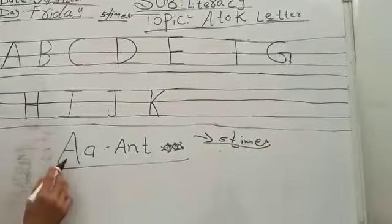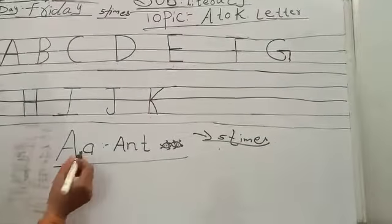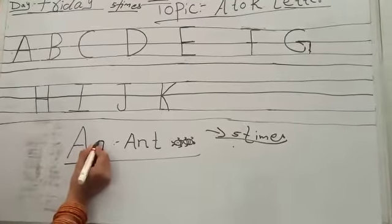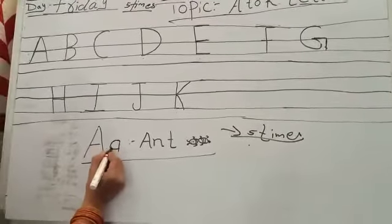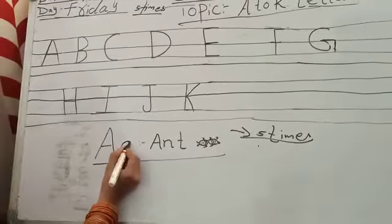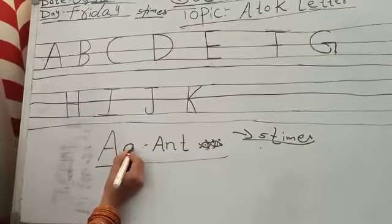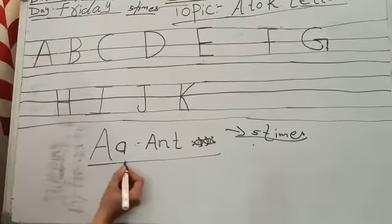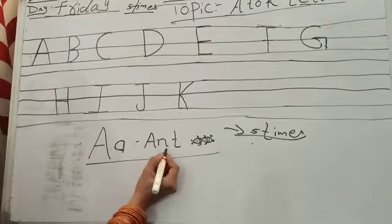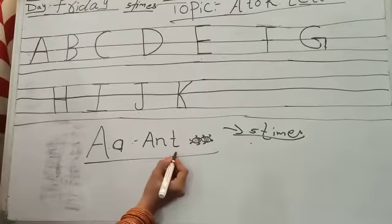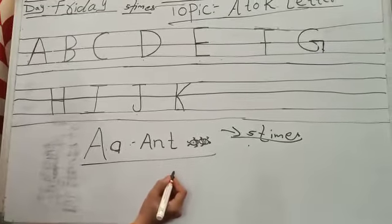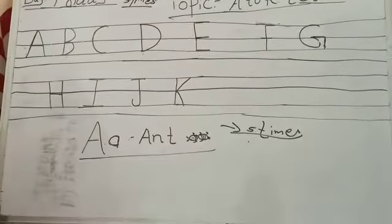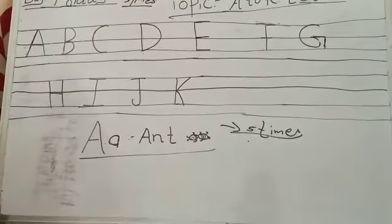Now next, A-A. Like this, you should write A. First curve, then standing line. That is the A. A-A. A-N-T, ANT. Like this, you should write in your notebook five times.